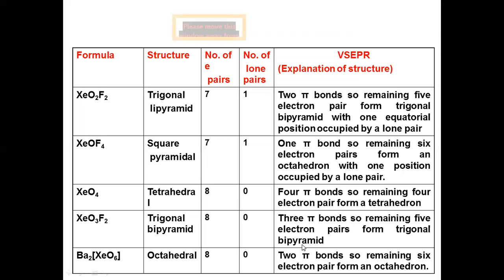Xenon dioxide difluoride (XeO₂F₂) has a trigonal bipyramidal structure. The total number of electron pairs is seven and the number of lone pairs is one. Two pi bonds mean five electron pairs form a trigonal bipyramidal arrangement with one equatorial position occupied by the lone pair.